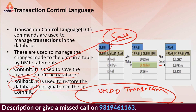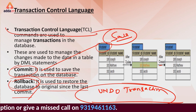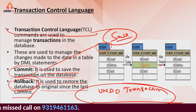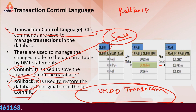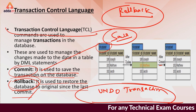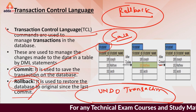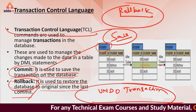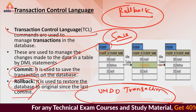In TCL you have two key commands. ROLLBACK is used to undo a transaction — it reverses changes that have not yet been committed. COMMIT saves the transaction permanently to the database.